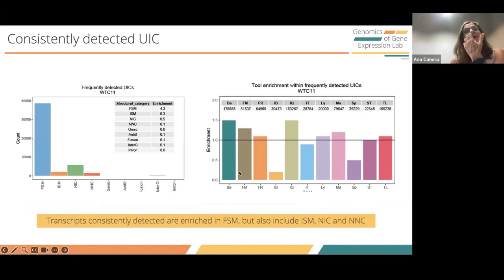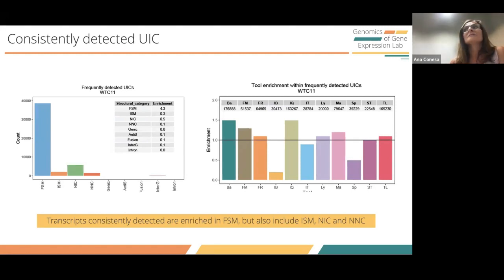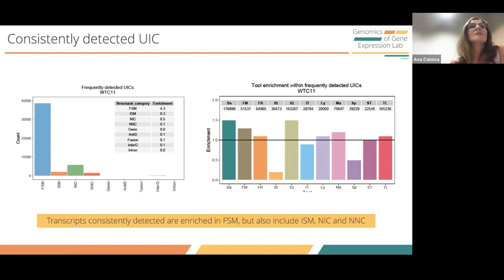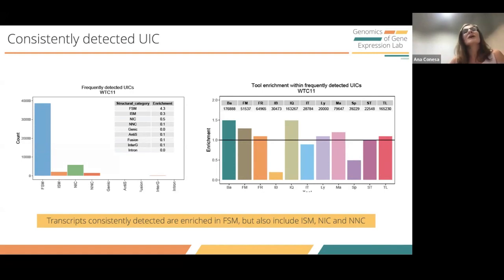Looking at transcripts detected by at least three experimental methods and at least three bioinformatics approaches, there is a huge increase of reference full splice matches. But very interestingly, there is still a significant amount of novelty. The novelty with the highest agreement is in the novel-in-catalog category, meaning we are seeing novel combinations of existing building blocks — existing exons, existing junction sites. It seems there is a lot of novelty to be detected in alternative combinations of exon blocks.